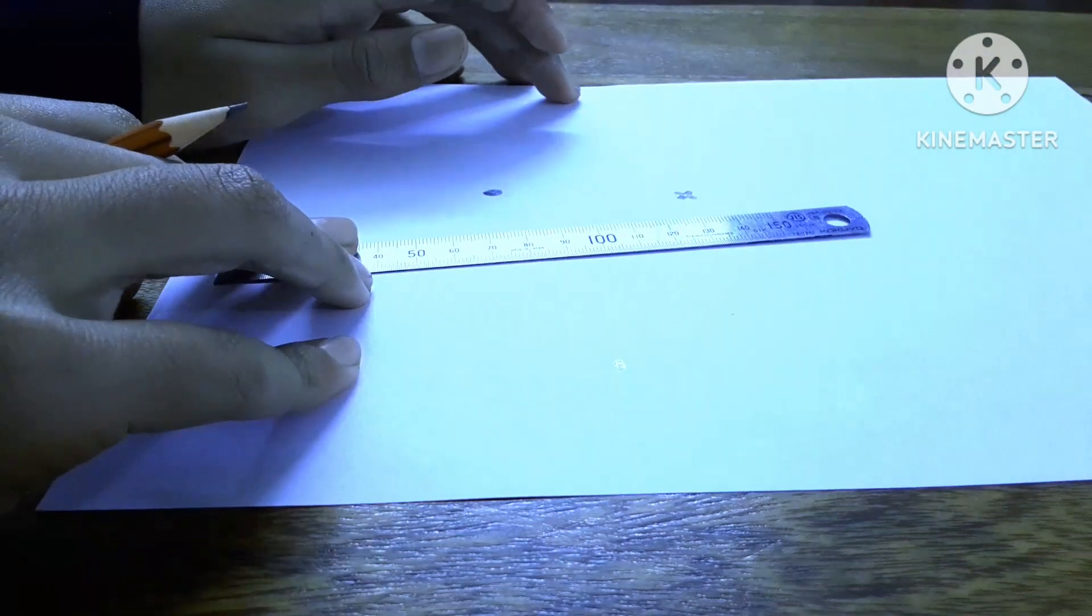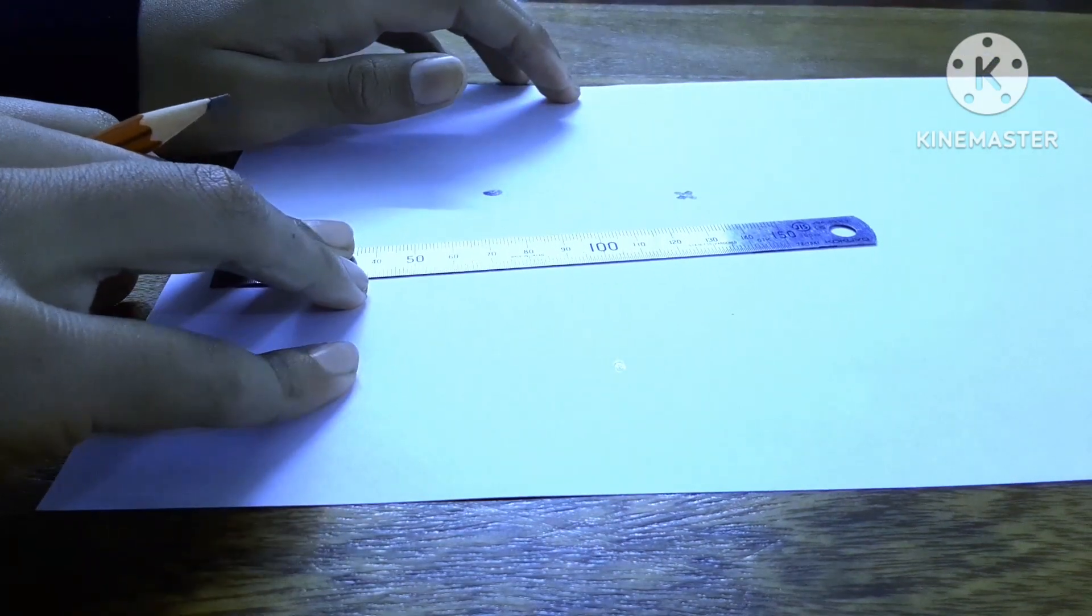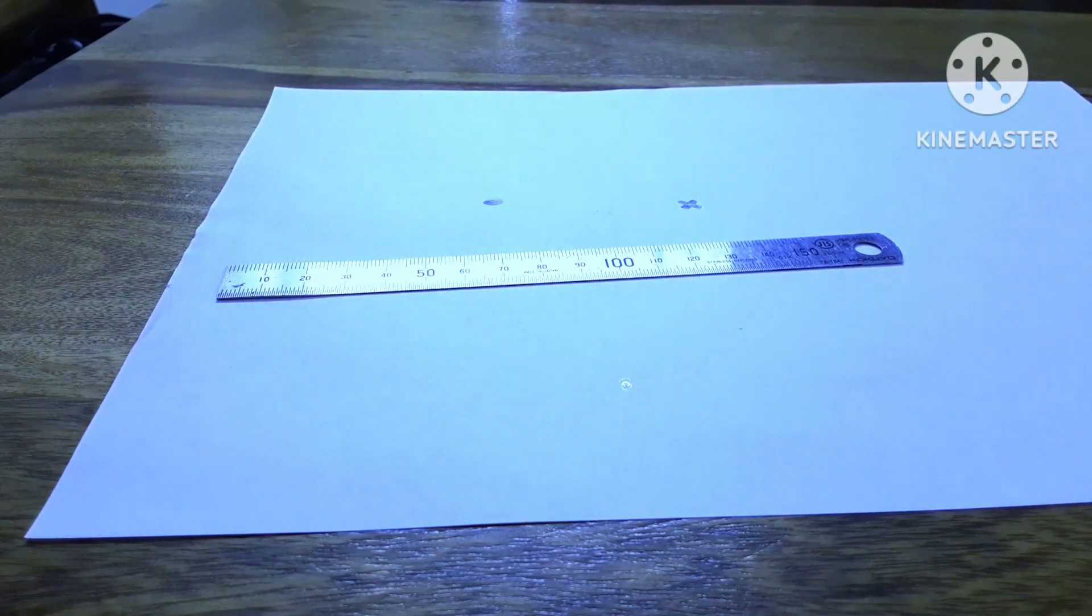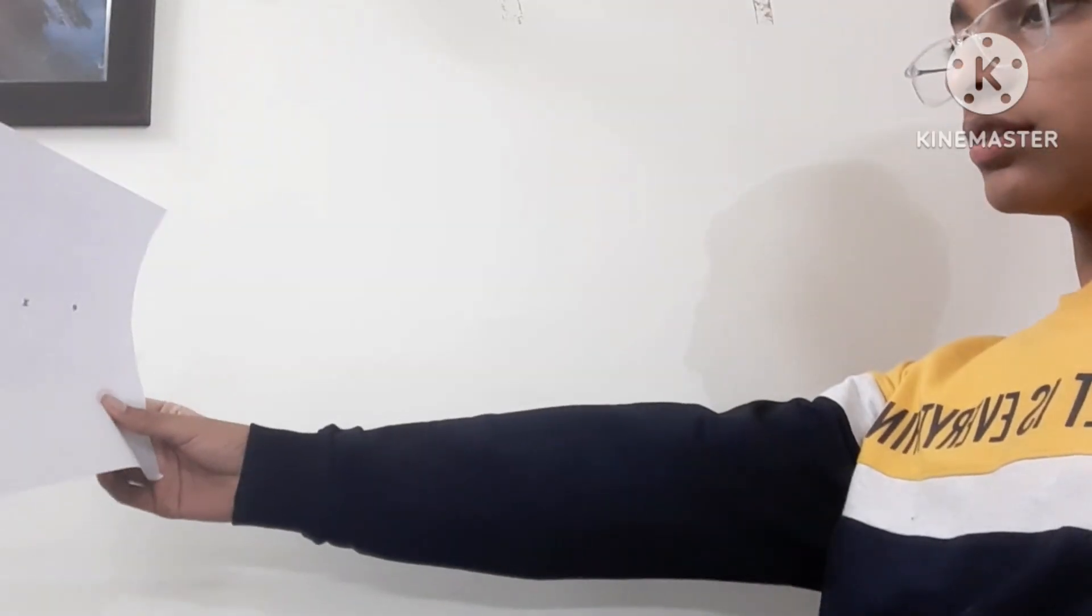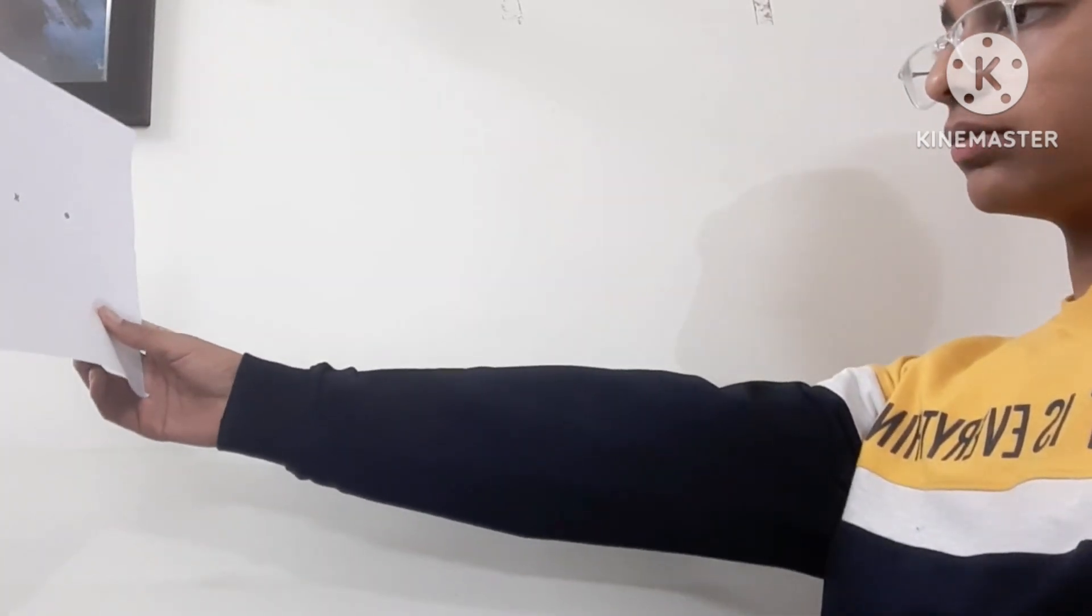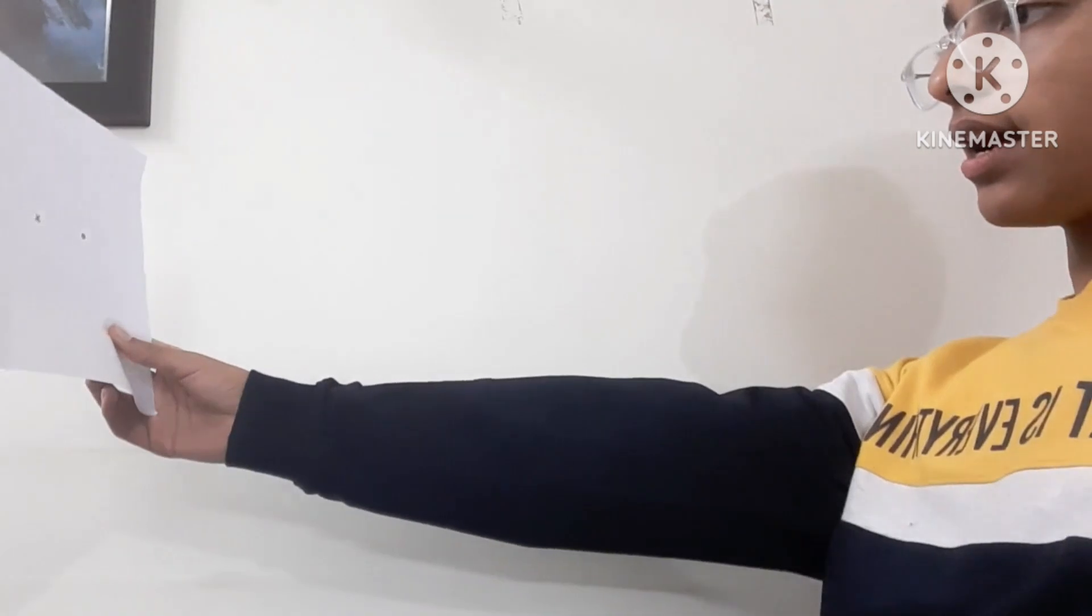Now for the rest of the steps, you have to hold your A4 size sheet in front of your eyes. Let me show you how. Just keep your A4 size sheet in front of your eyes about one arm distance.